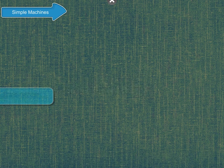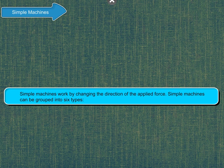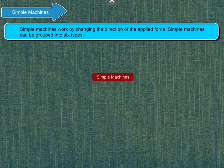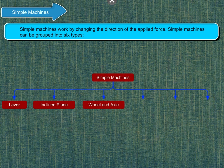Simple Machines work by changing the direction of the applied force. Simple Machines can be grouped into six types: Lever, inclined plane, wheel and axle, pulley, screw, and wedge.